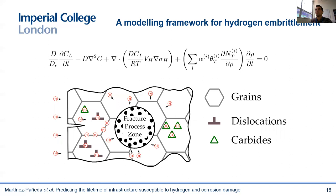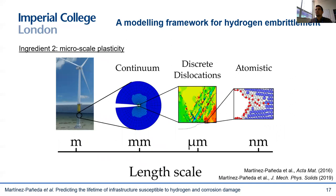First, what I was showing was the simplest formulation for hydrogen diffusion. In reality, hydrogen not only diffuses freely through the lattice, but is also trapped on microstructural sites such as grain boundaries, dislocations, carbides, and so on. So we have also developed more comprehensive models that can capture the role of multiple hydrogen trap types. Second, we need to choose a constitutive model to characterize the mechanical response of the solid, and this choice depends on the scale. We know from experiments that the critical distance for hydrogen cracking is of a few microns ahead of the crack, so we need to resolve the physics at the microscale.